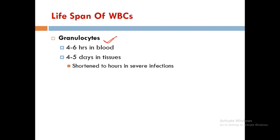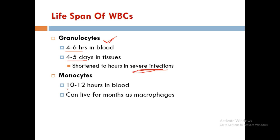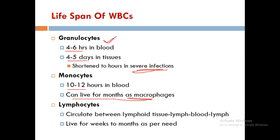Lifespan of WBCs: granulocytes live 4 to 6 hours in blood and 4 to 5 days in tissue, though shortened during severe infection. Monocytes live 10 to 12 hours in blood but can live for months as macrophages. Lymphocytes circulate between lymphoid tissue, blood, and lymph, and live for weeks to months as needed.